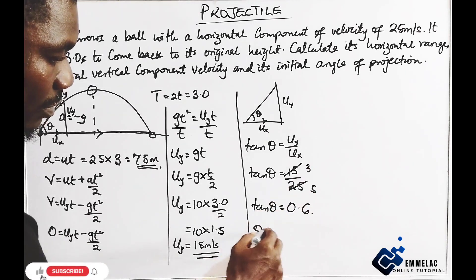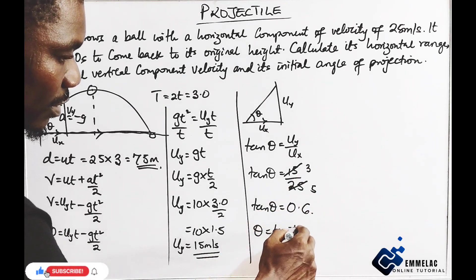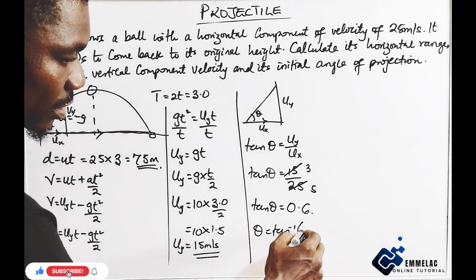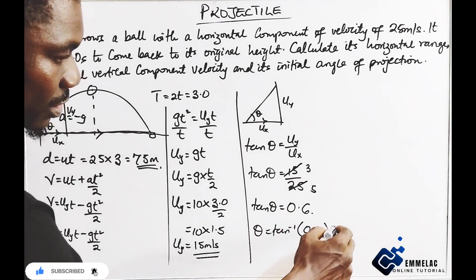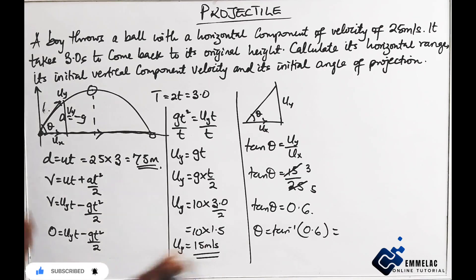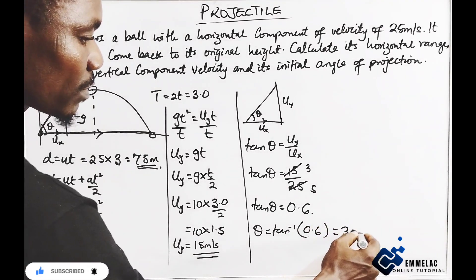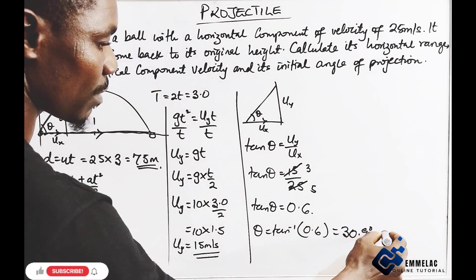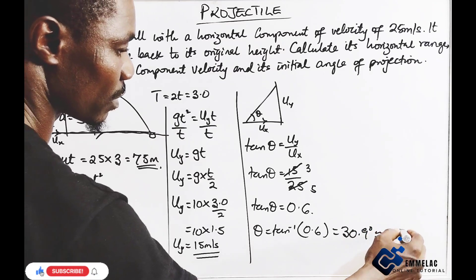So the inverse tan of 0.6, punching our calculator here, and we should be having inverse tan 0.6. We have 30.9 degrees, approximately 31 degrees.